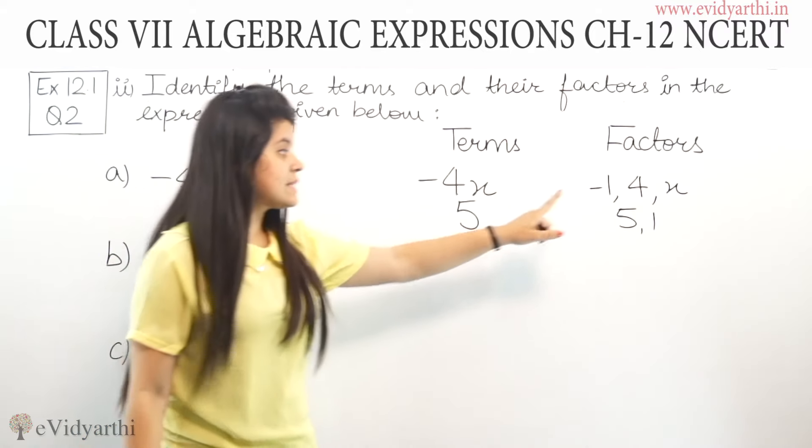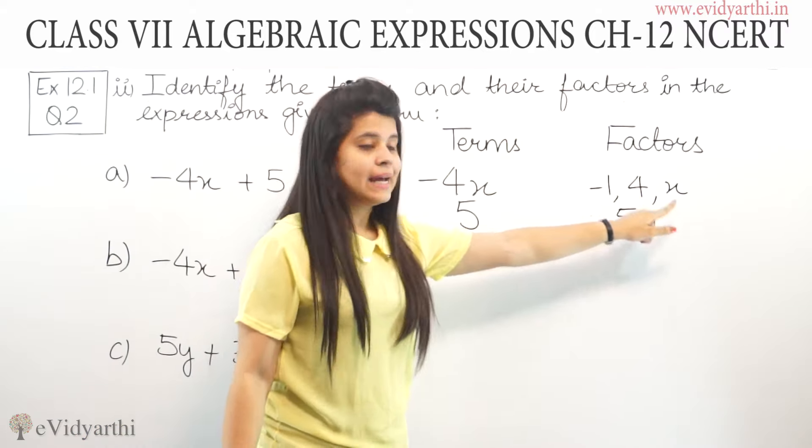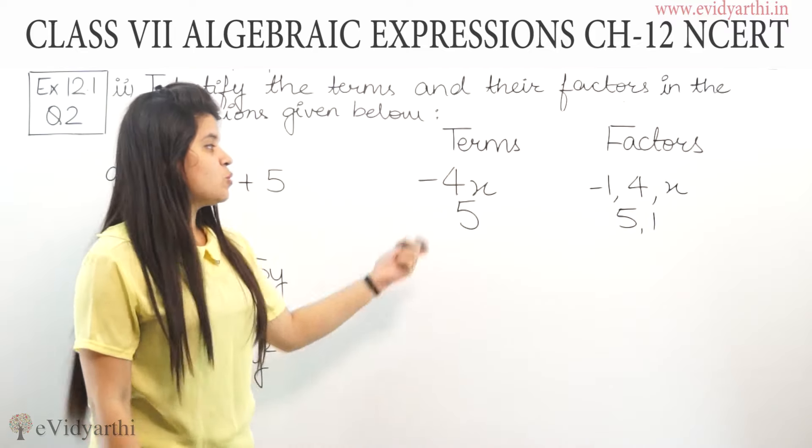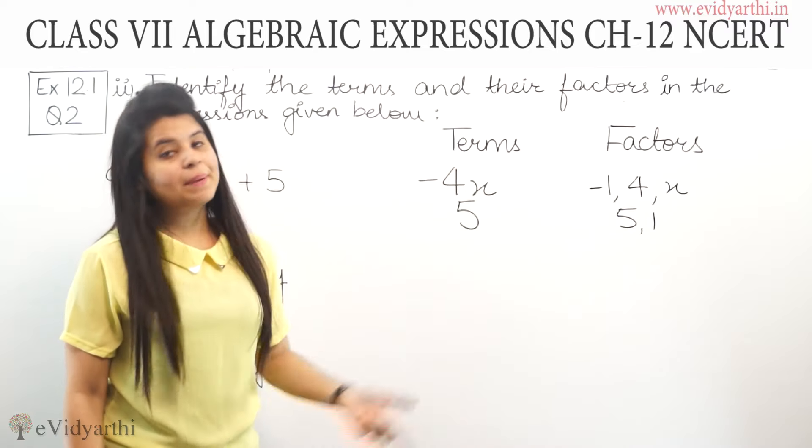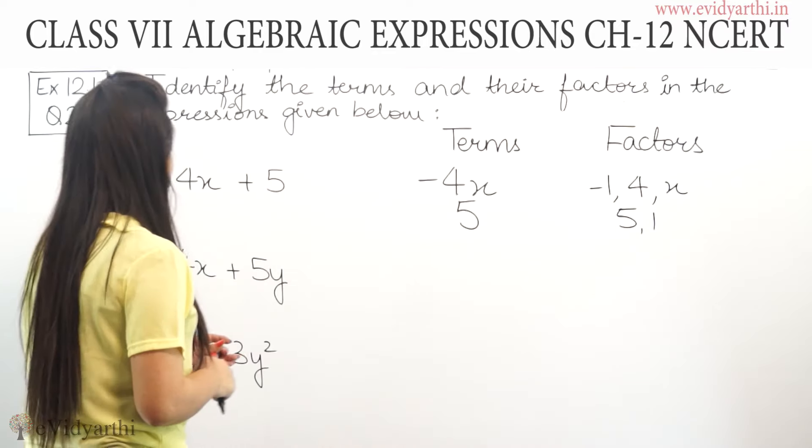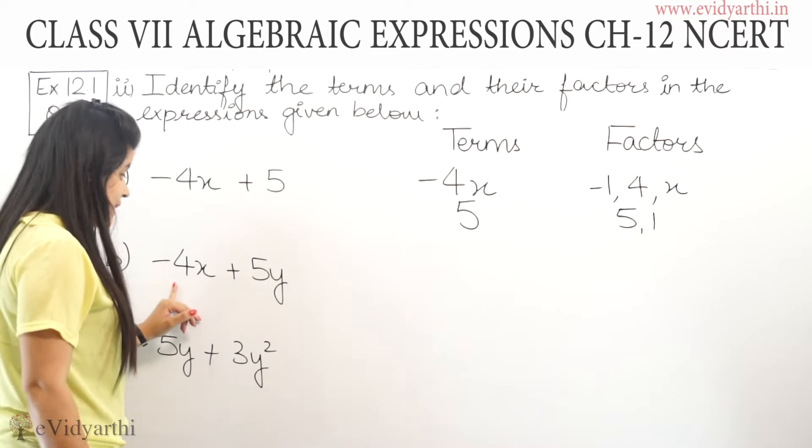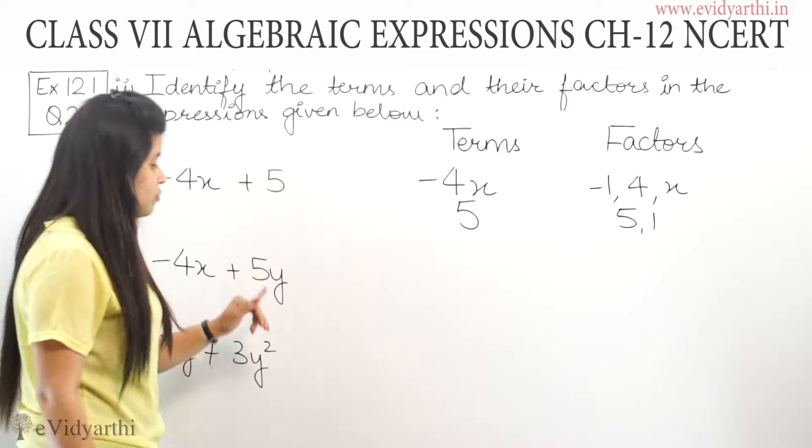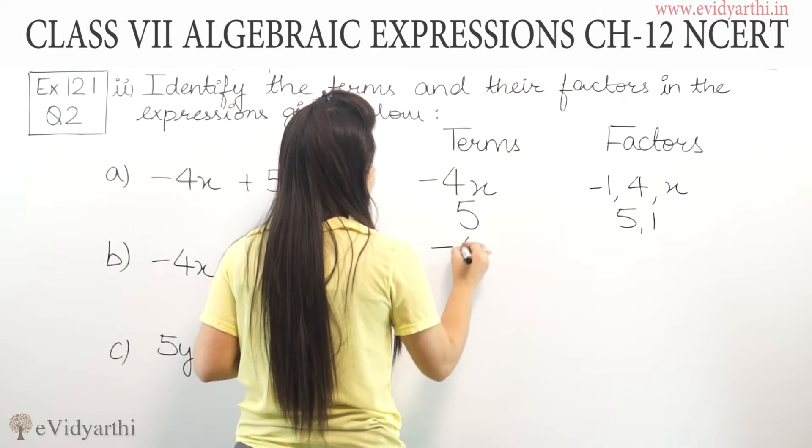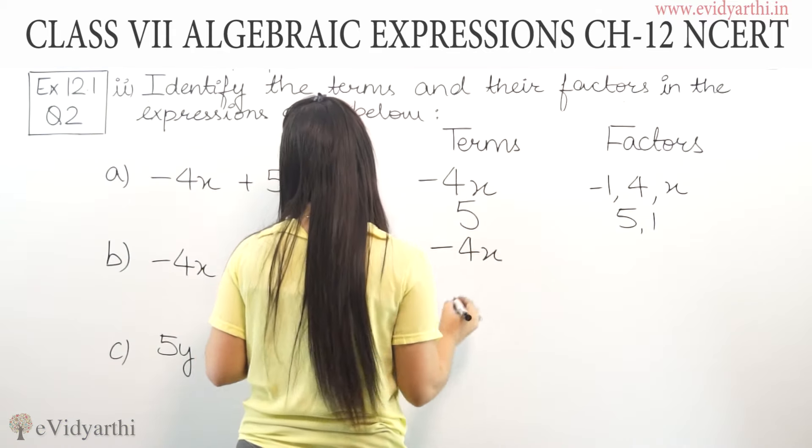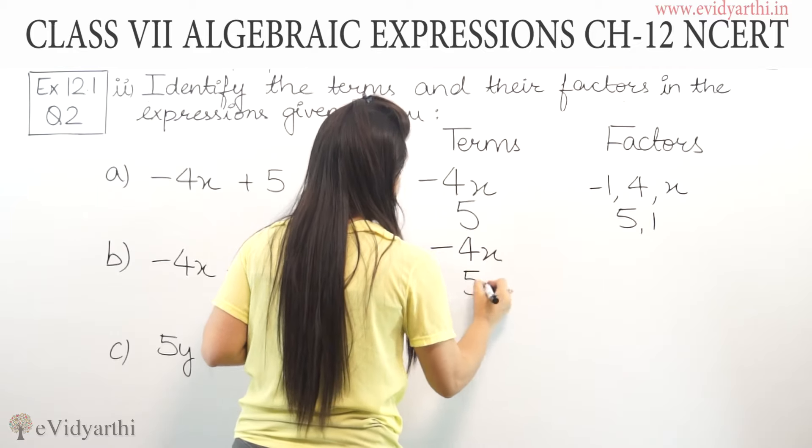So, the factors of -4x are -1, 4, and x. We have to do the same thing, but instead of a tree diagram, we'll write it normally. For part b, we have -4x + 5y. Here also, there are two terms: -4x and 5y.